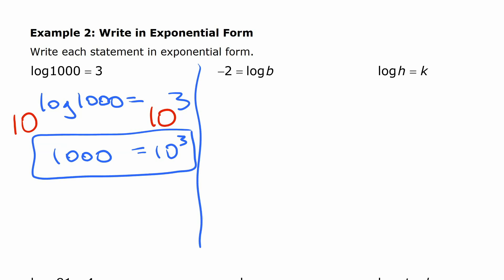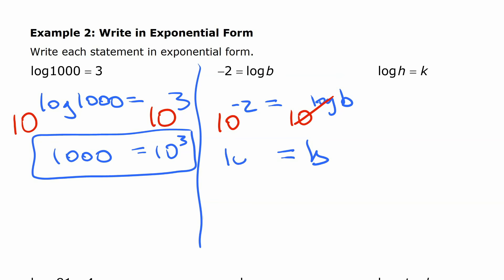The second one: log b equals negative two. We do anti-log base ten on both sides because we're working with common logs. That cancels out and we have b on one side and ten to the negative two on the other, which we could write as one over a hundred or 0.01, but we'll leave it as ten to the negative two.